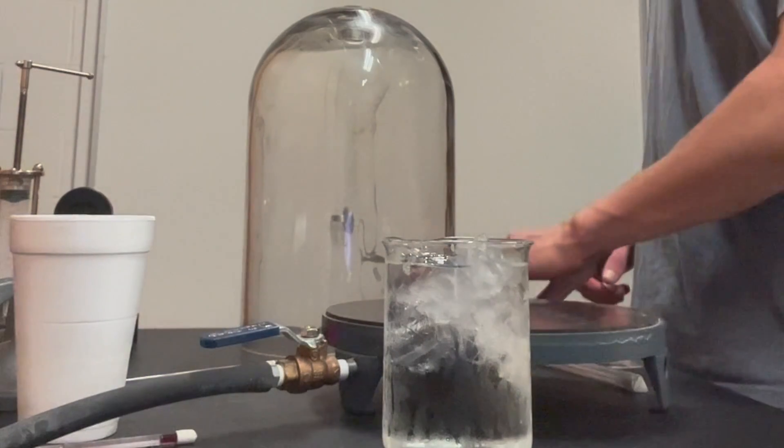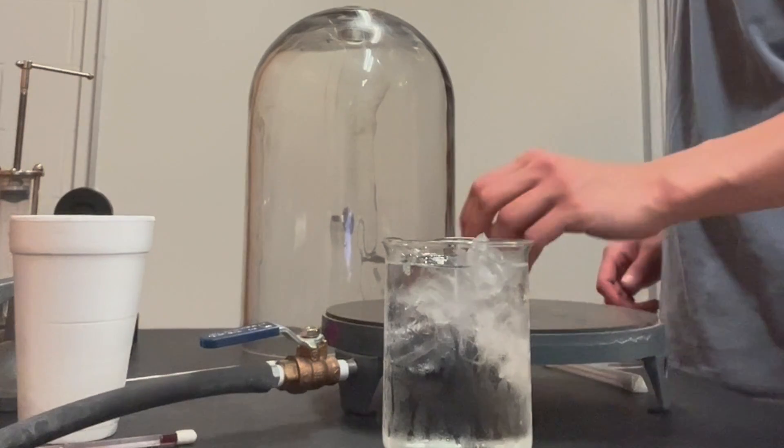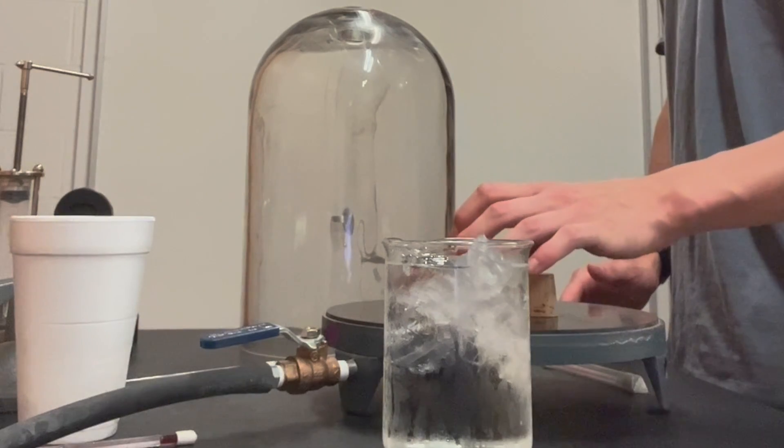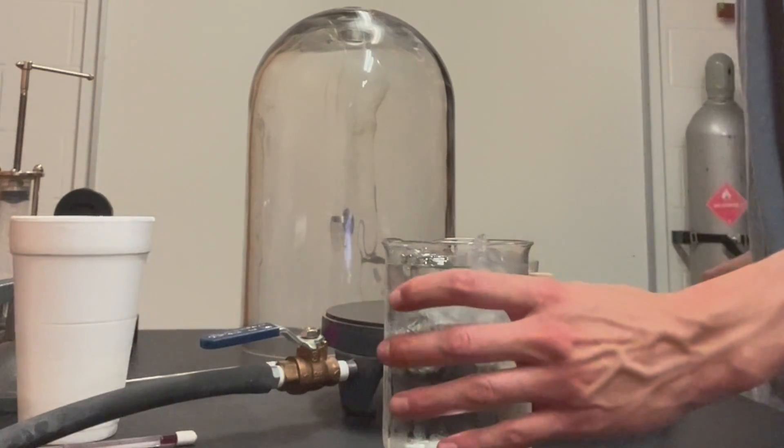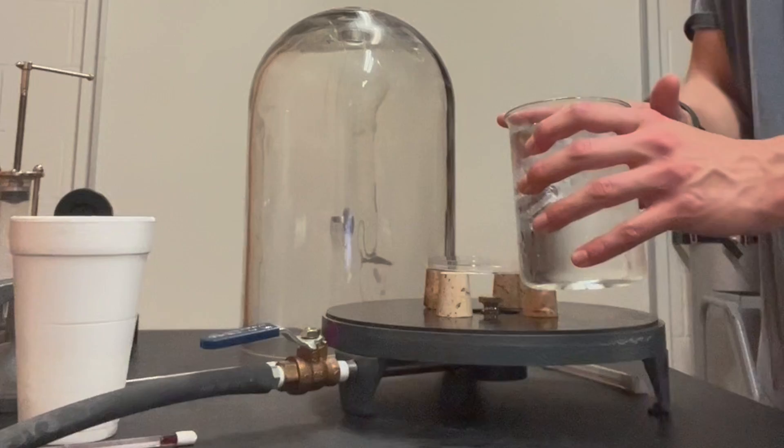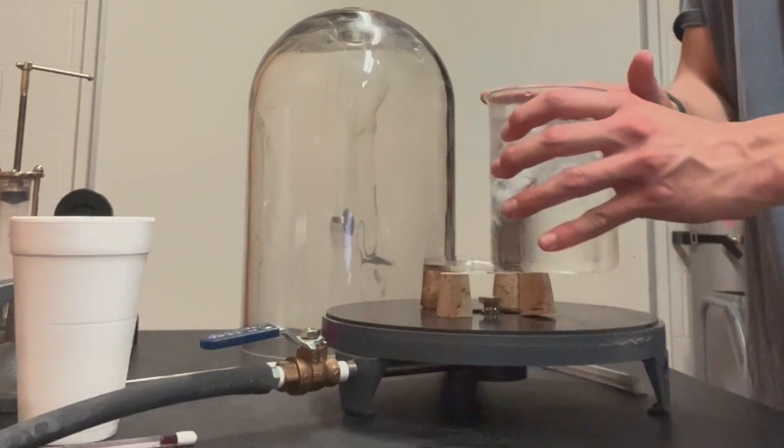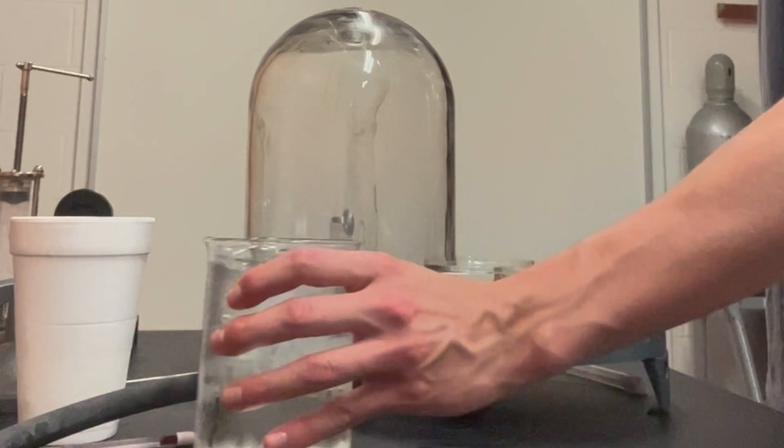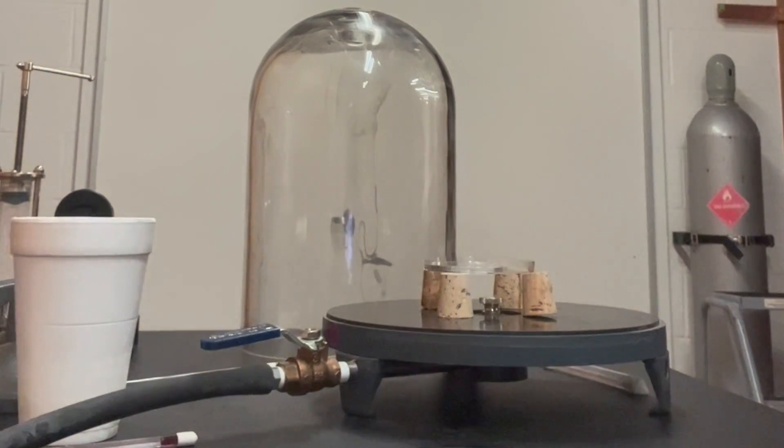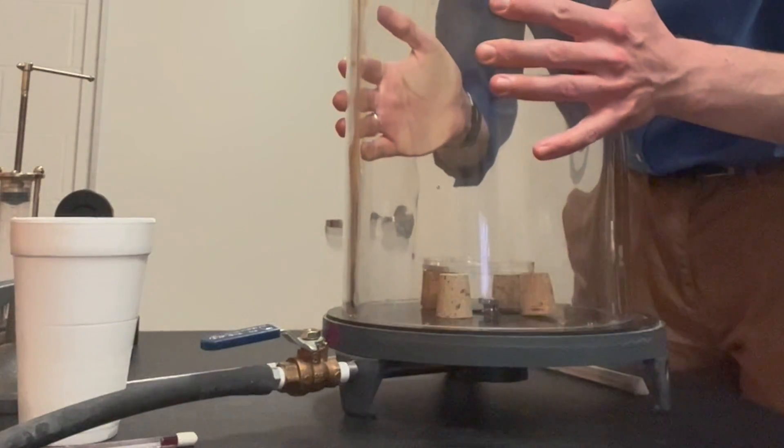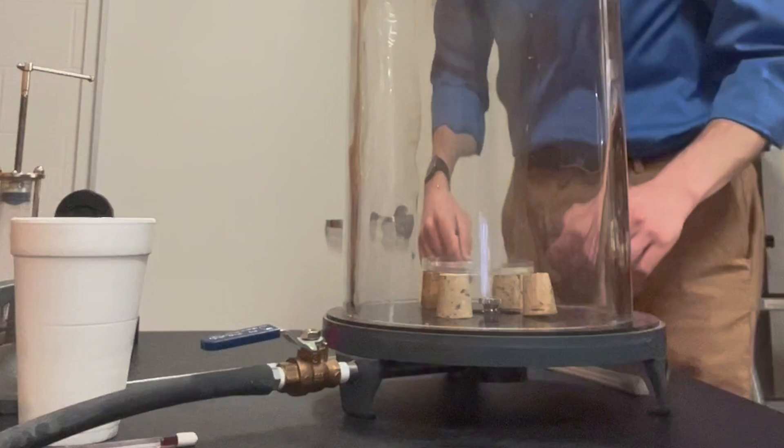I started by placing corks on the base of the gas chamber to elevate the petri dish so that it was not interfering with the gas chamber's pressure reduction. I then placed the petri dish on the corks and poured ice cold water into the dish. The reason for pouring ice cold water and not room temperature water is that the closer the substance is to its freezing point, the quicker it will reach the triple point. For the sake of the experiment's length and due to the quality of my gas chamber, this was a necessary experimental adjustment.